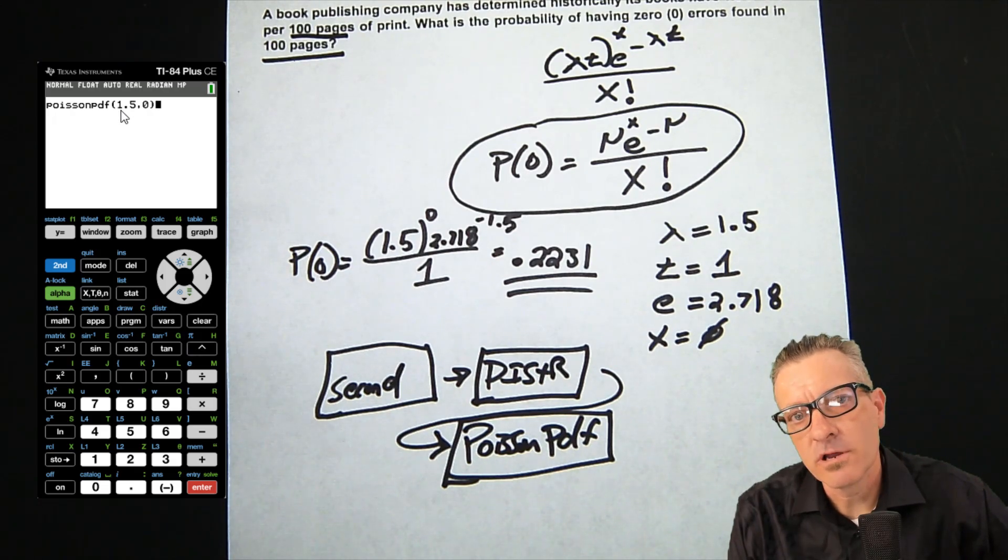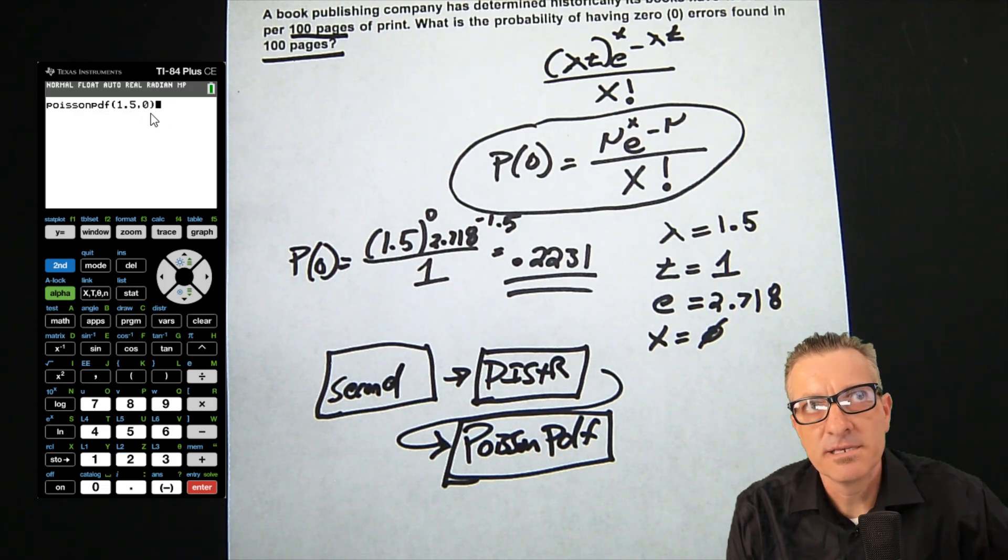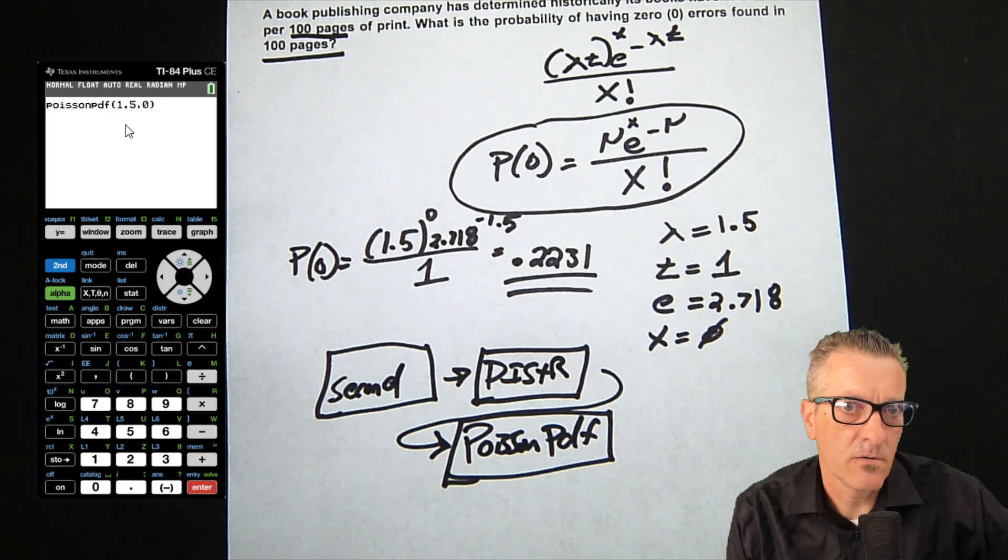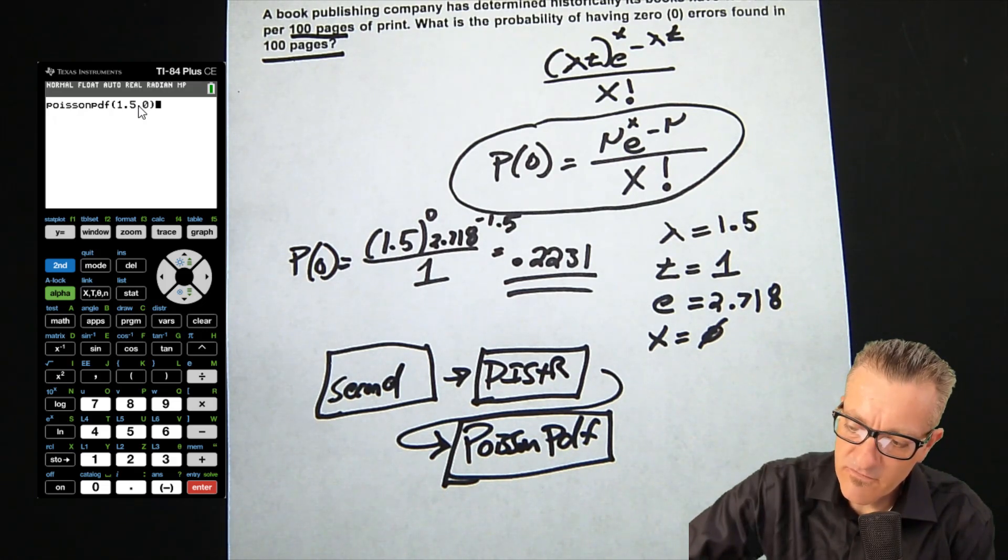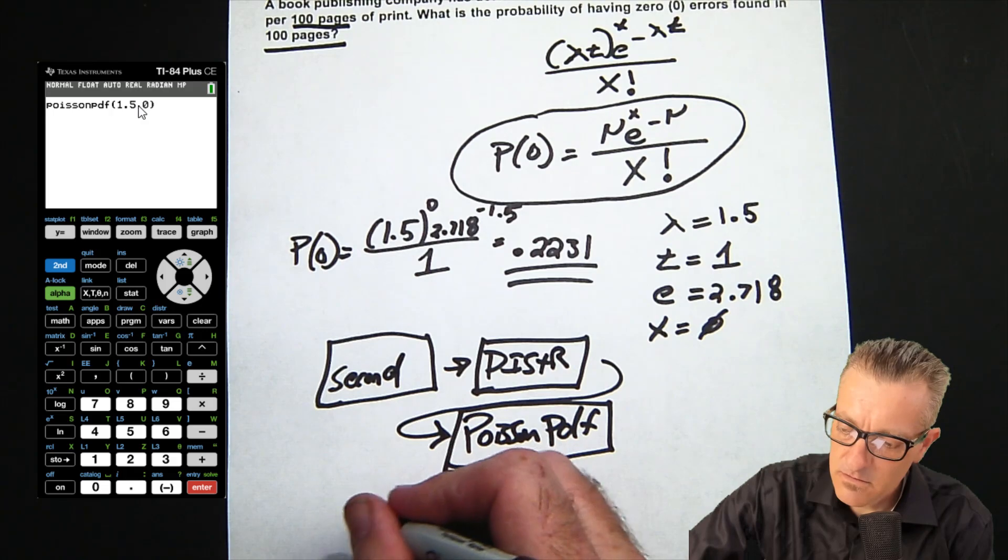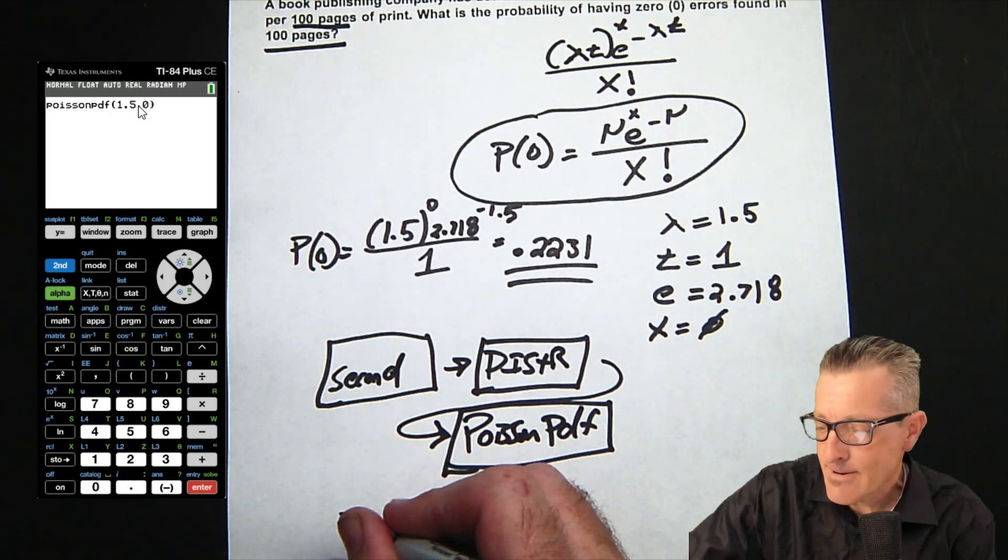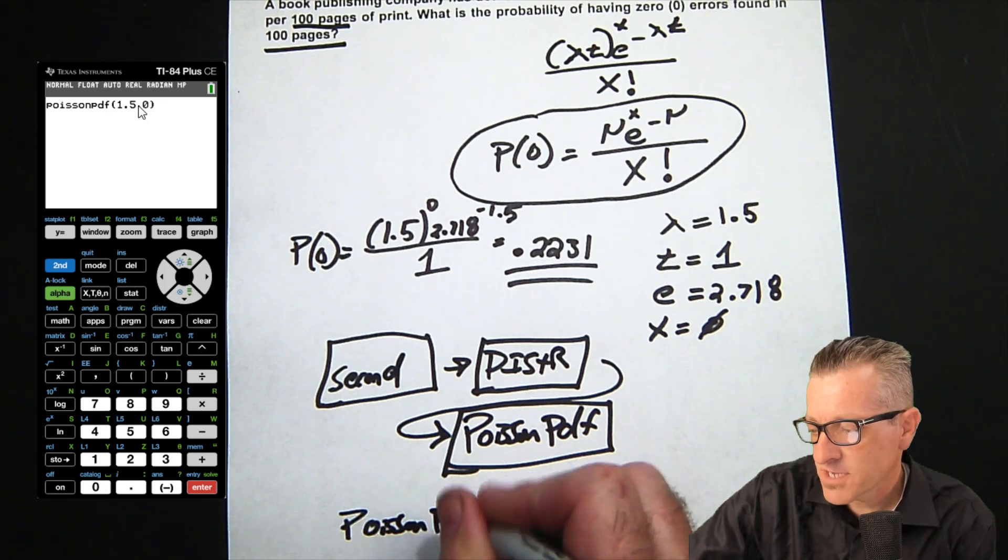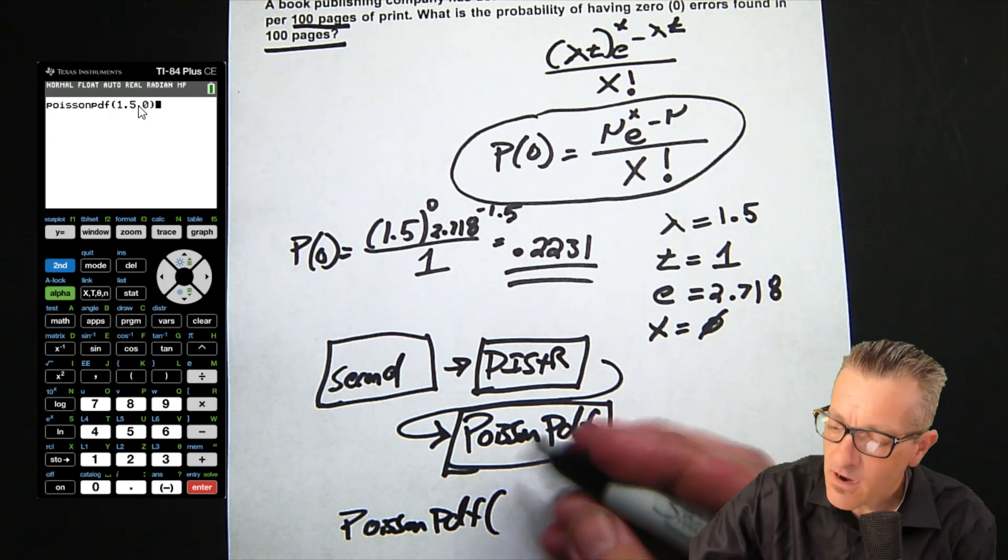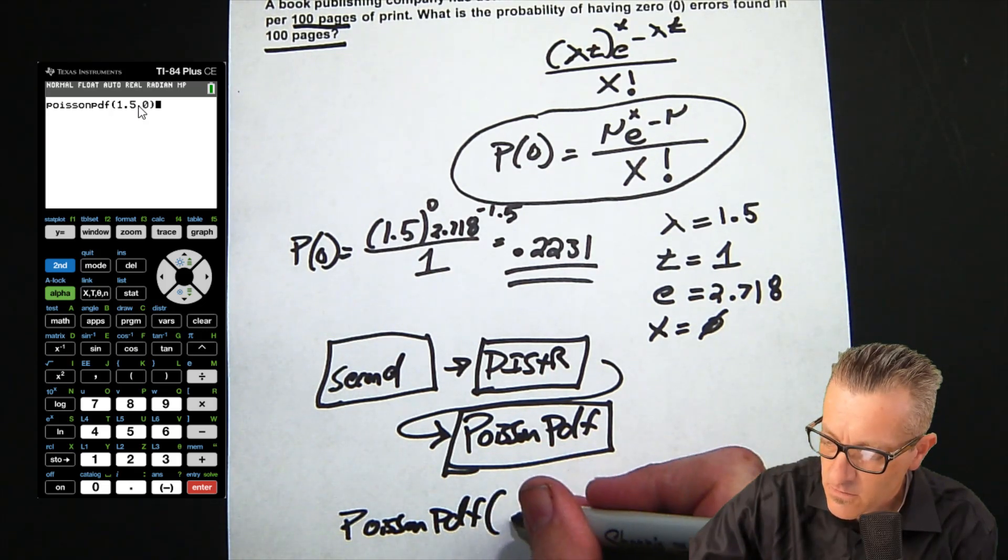So it's really easy in the calculator. Then hit enter. Now if you have a calculator where it just brings you up with an open parenthesis, you have to put this in. You need to remember where the variables go. That's where I would write out the way the variables go.